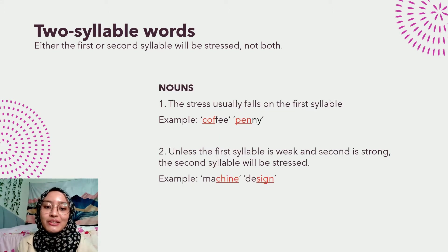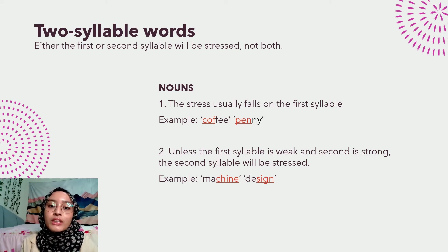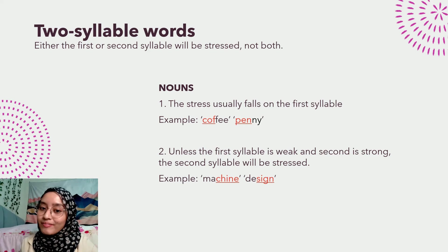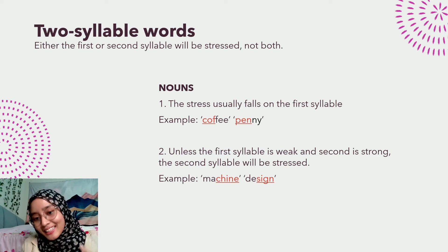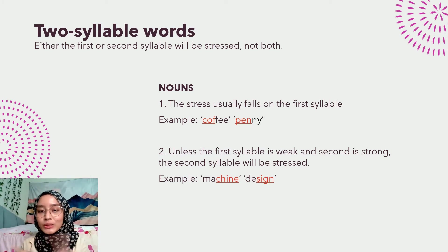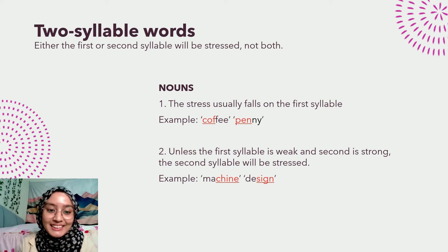Now let's look at nouns. For two-syllable nouns, usually we stress on the first syllable. For example, the word 'coffee', 'penny'. So what if the first syllable is weak? Then we stress on the second syllable, like a swap. For example, the word 'machine', 'design'.